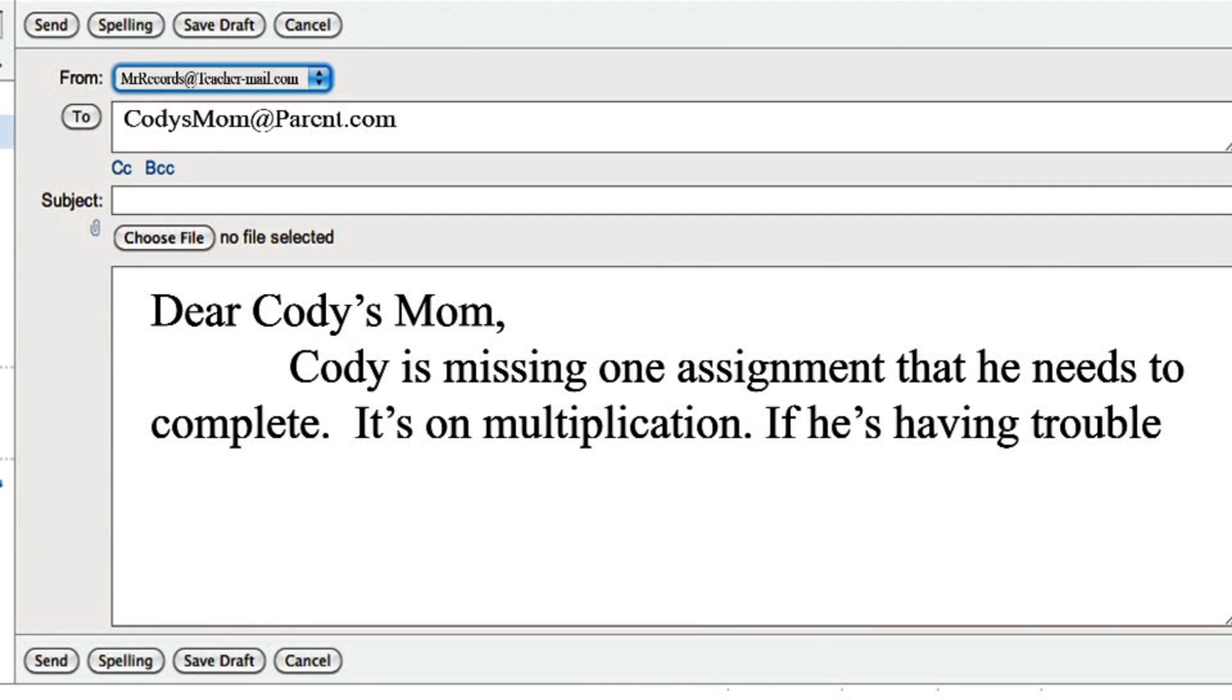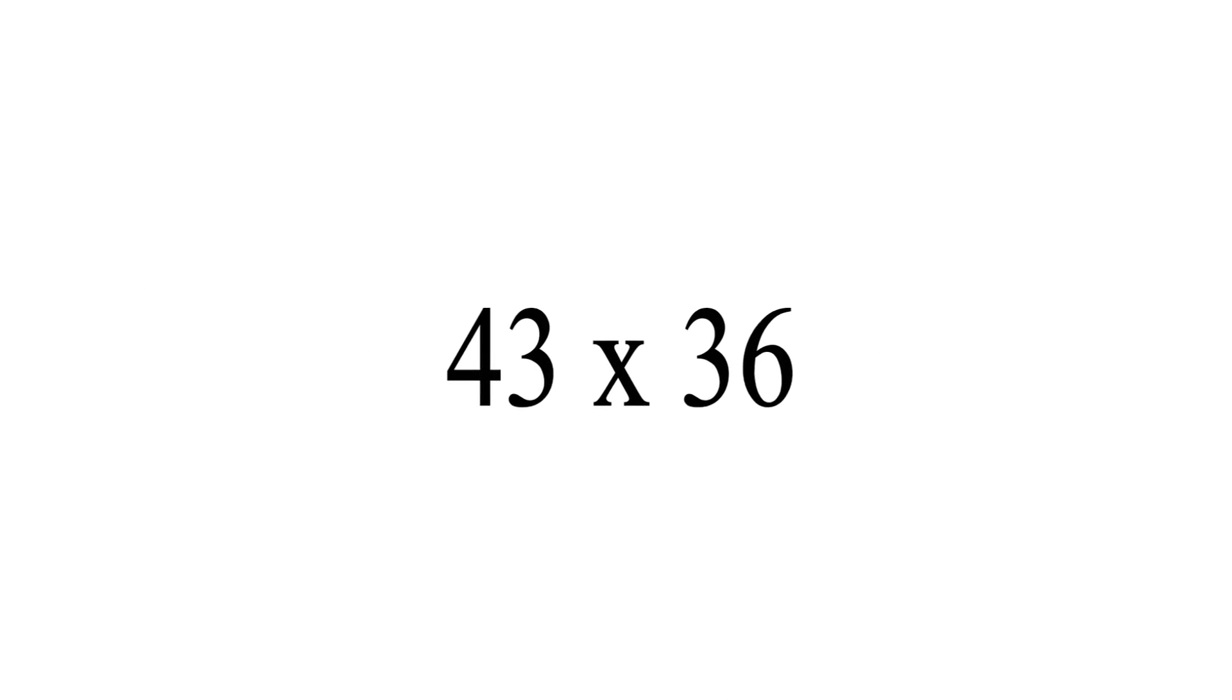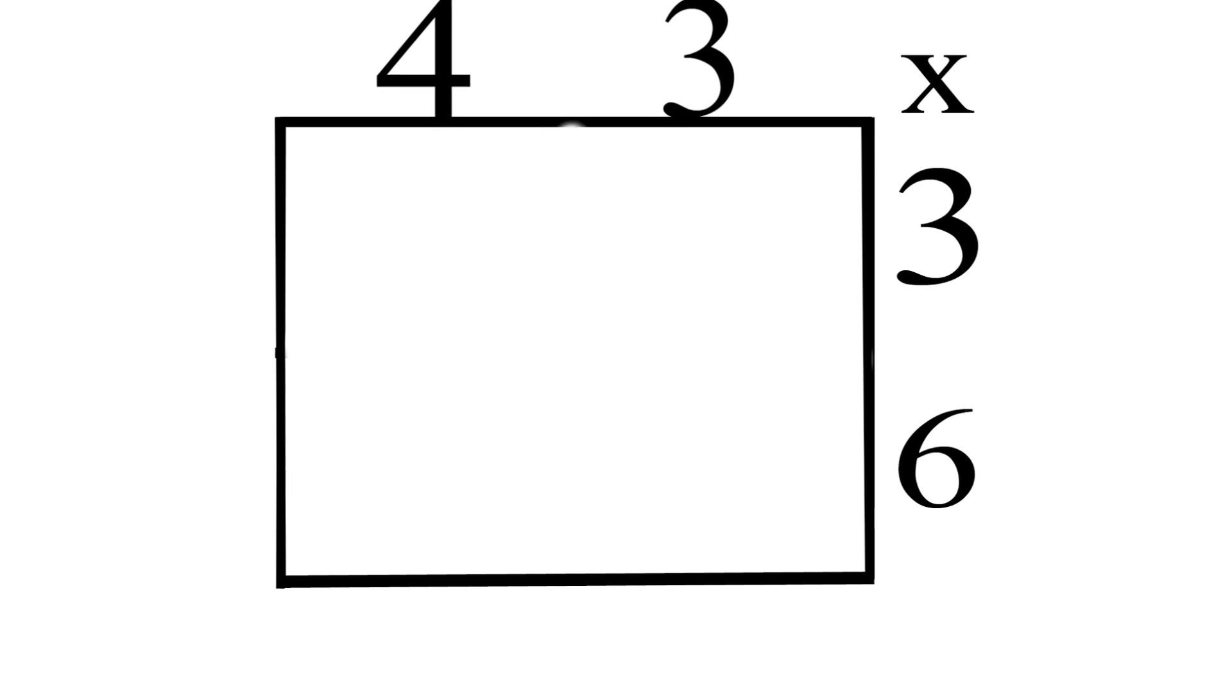If he's having trouble, try the lattice method. Here's how. Let's look at the two-digit multiplication problem 43 times 36. First draw a box, then add your problem to the top and to the right of the box, then